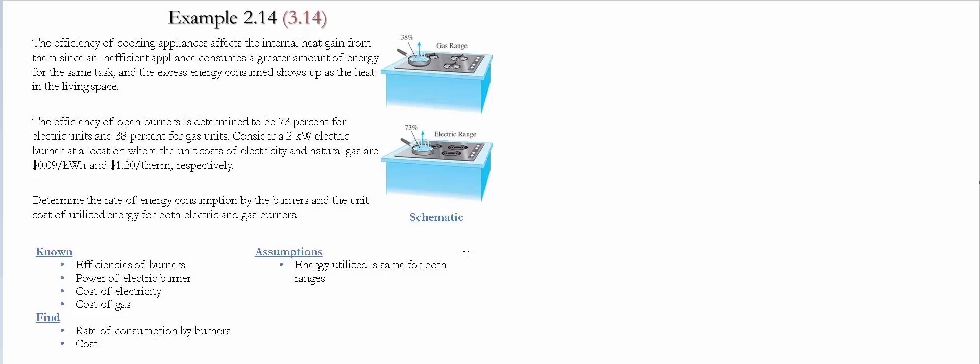Example 2.14 or 3.14 for both textbooks. For details, please see the description below. The efficiency of cooking appliances affects the internal heat gain from them, since an efficient appliance consumes a greater amount of energy for the same task, and the excess energy consumed shows up as heat in the living space.